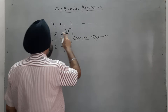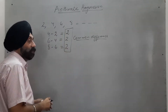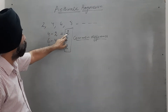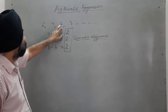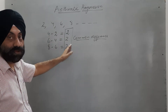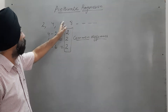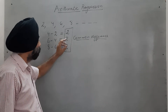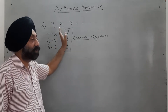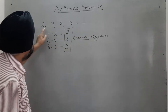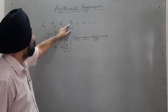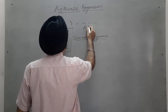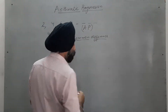This common difference is constant — 4 minus 2 is 2, 6 minus 4 is 2, 8 minus 6 is 2. So this should remain constant throughout, then the numbers are in AP, or Arithmetic Progression.